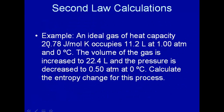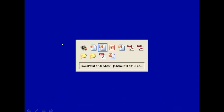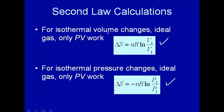Let's do another example. We have an ideal gas with a heat capacity of 20.78 joule per mole Kelvin. This ideal gas occupies 11.2 liters at 1 atmosphere pressure and 0°C. The volume is increased to 22.4 liters and the pressure decreases to 0.5 atmosphere, all at 0°C. Temperature remains constant. We're doubling the volume and decreasing the pressure, as expected for an ideal gas. This is an isothermal volume change, so we'll use the isothermal ideal gas entropy equation.